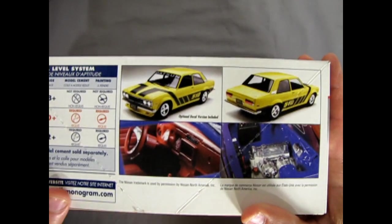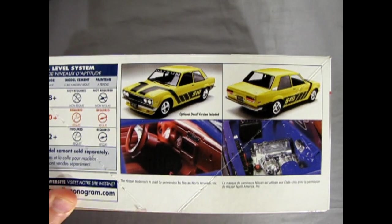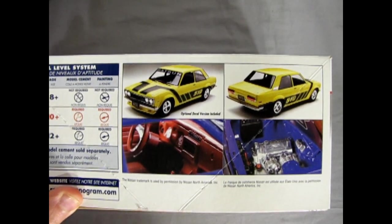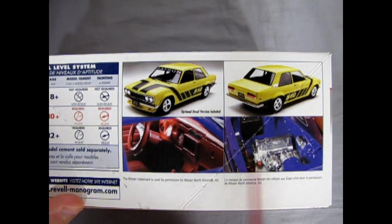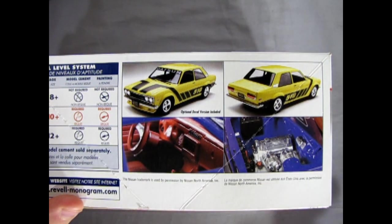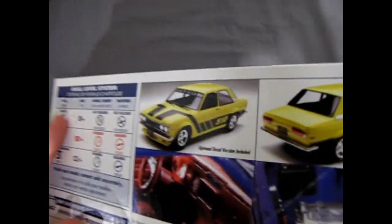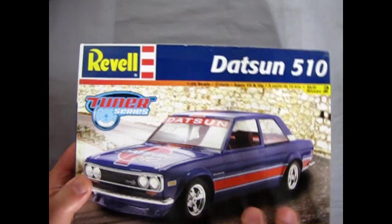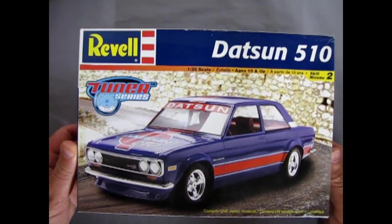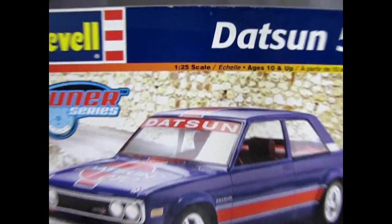We've got the edge of the box here. Here's the pictures we want to see. You get the yellow Datsun 510 option here which is cool and then the red and blue one the tuner edition which is on the box. Of course the end of the box looks much like the front.